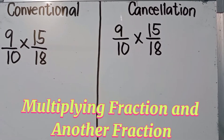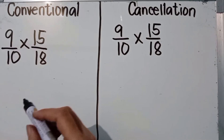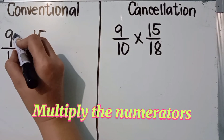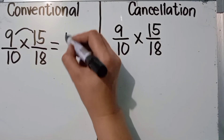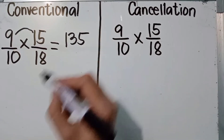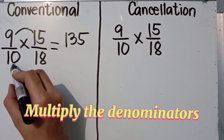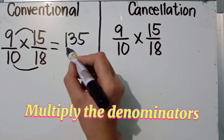Another example: nine over ten times fifteen over eighteen. Using the conventional method, multiply the numerators first: nine times fifteen equals 135. Then multiply the denominators: ten times eighteen equals 180.